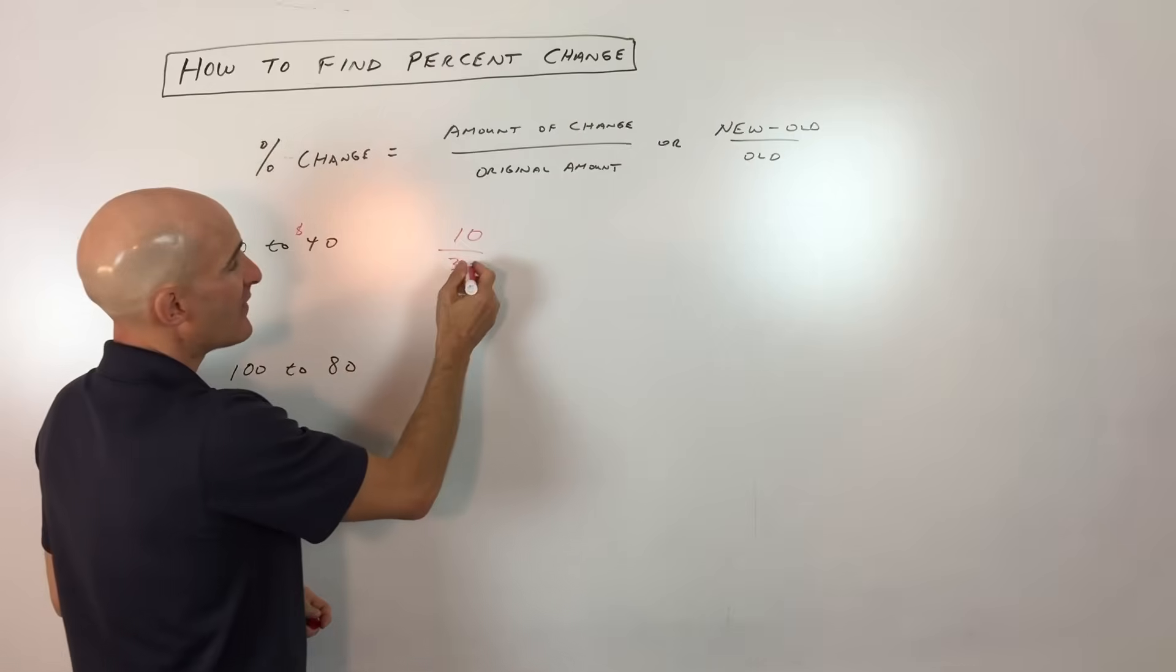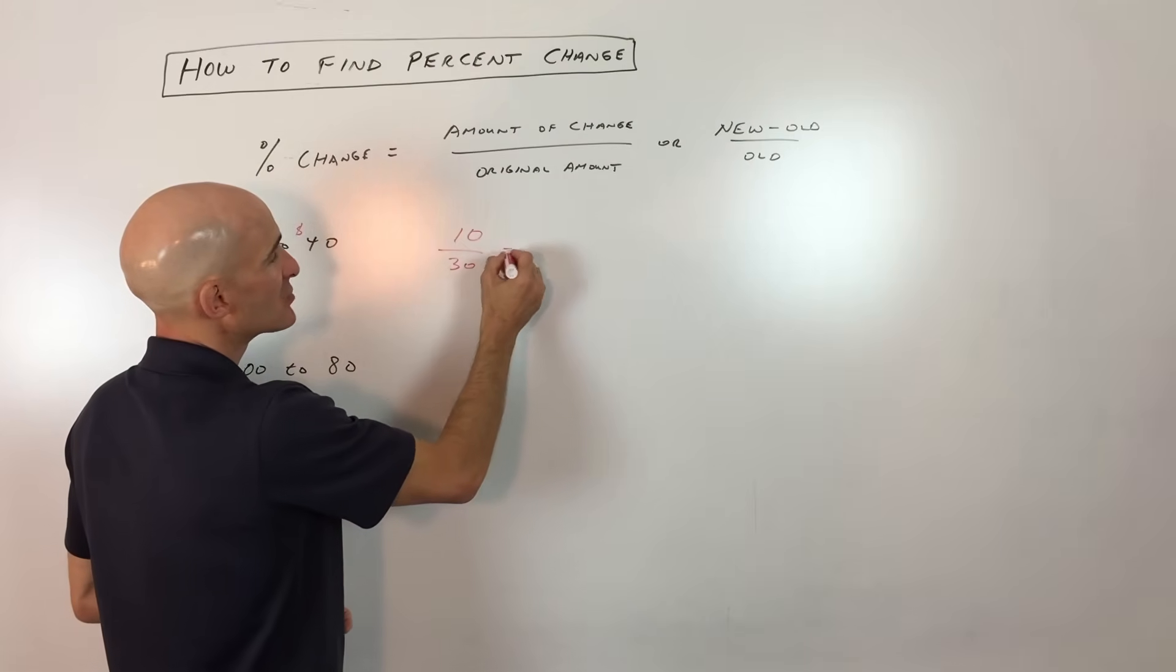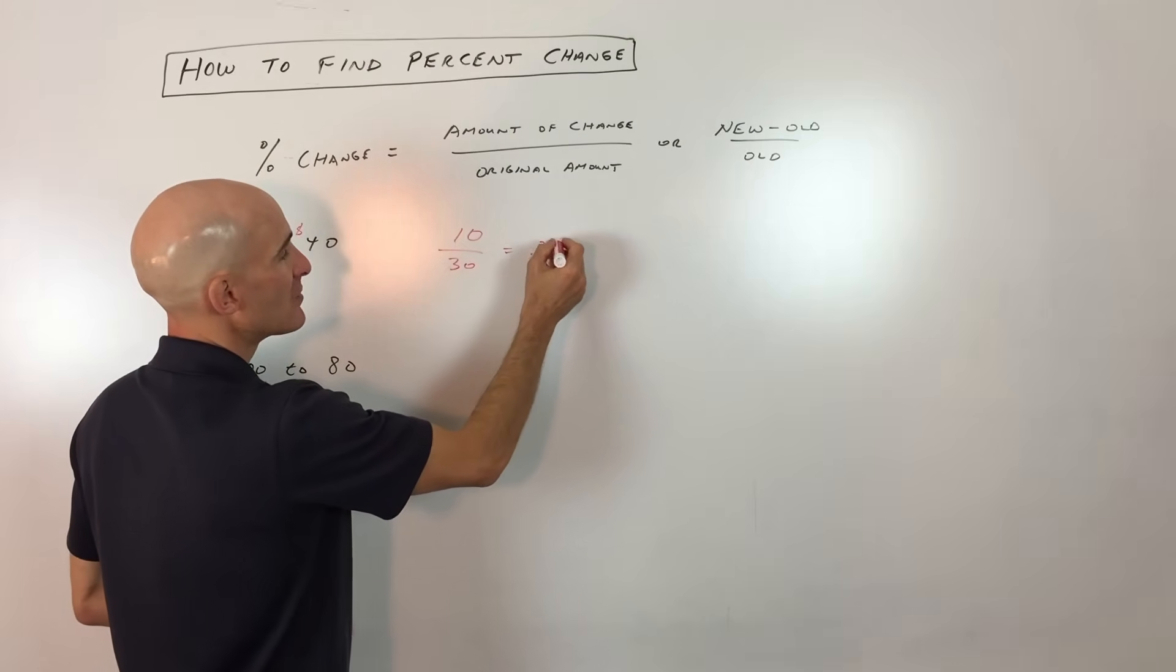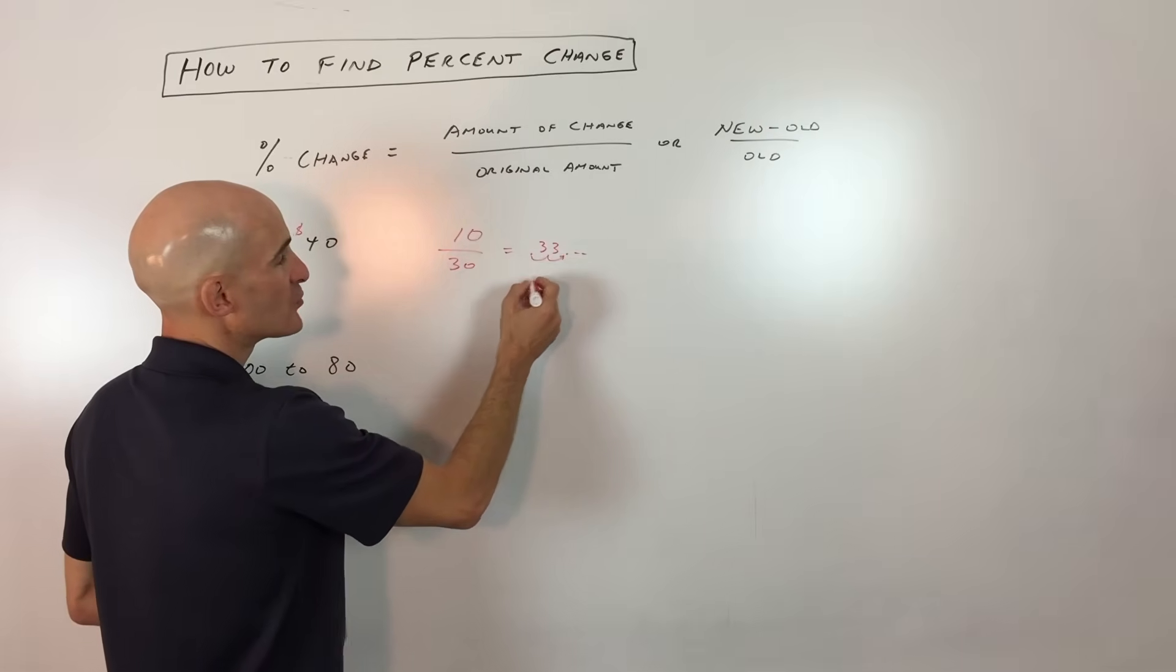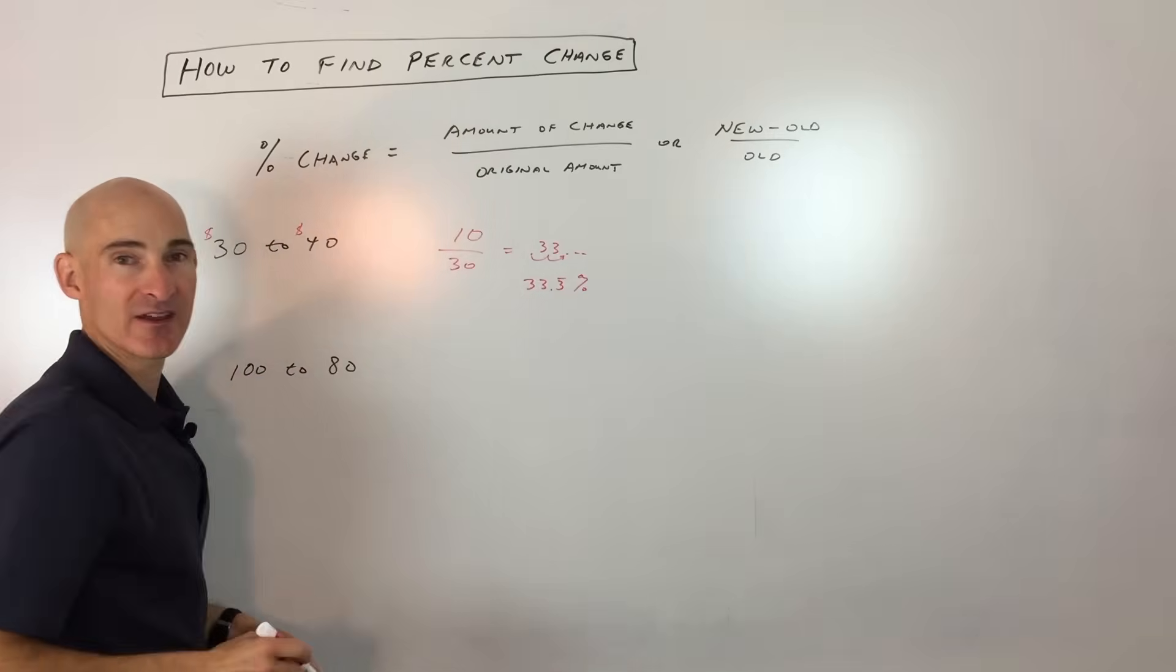Now if we divide here, $10 divided by $30 comes out to 0.333 repeating. So you could write this as a percent by moving the decimal two places - it's going to be 33.3%.